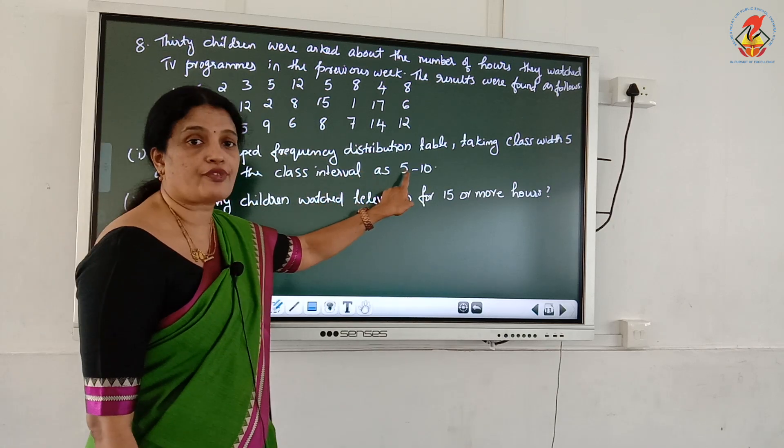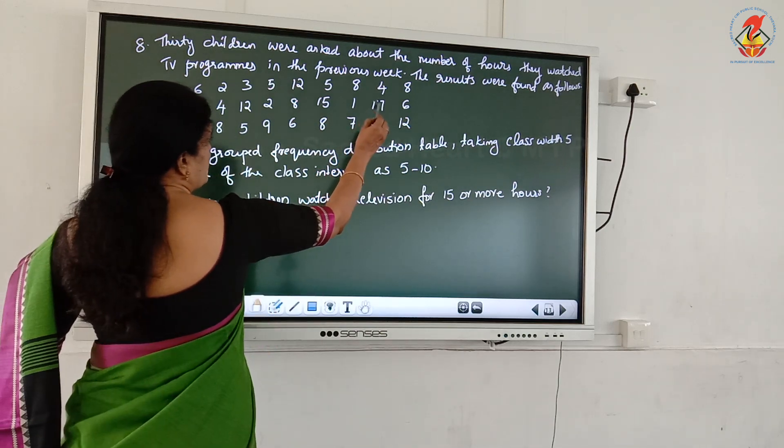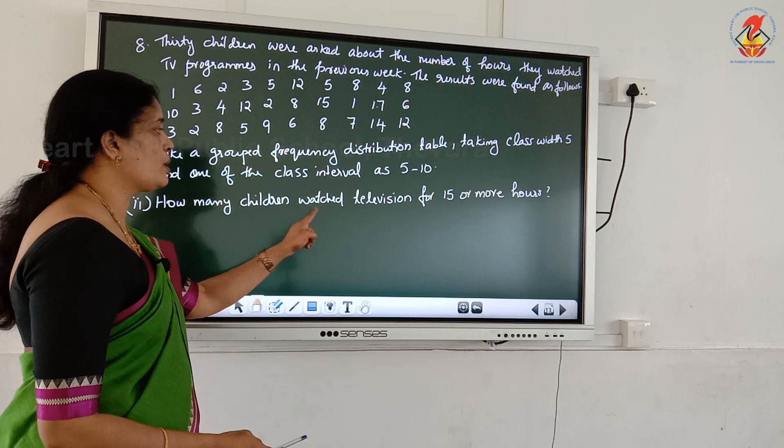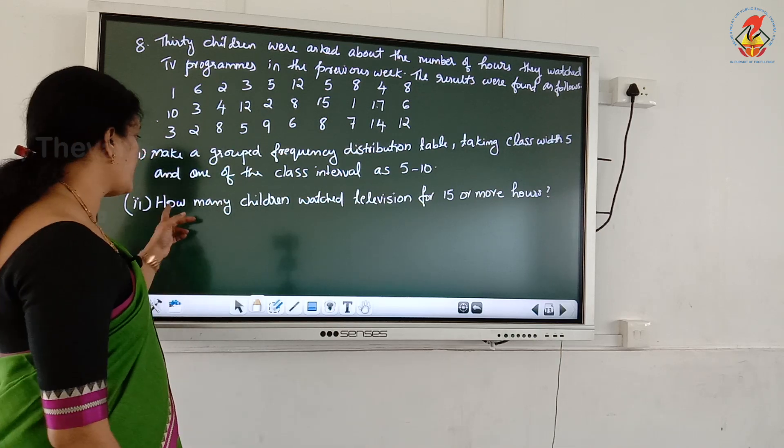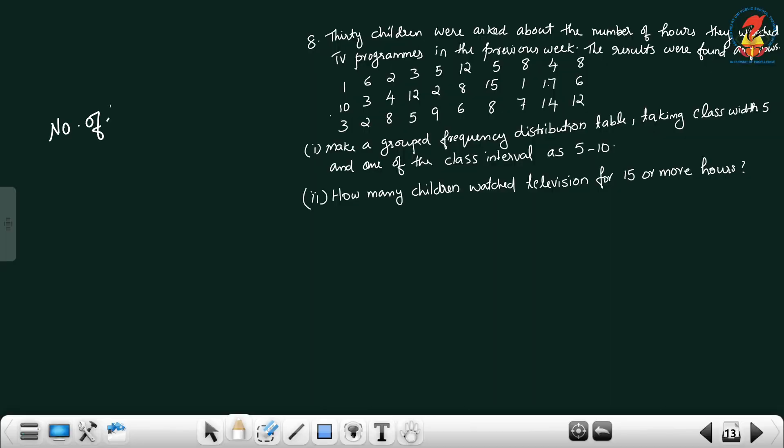Then we have to start from 0 to 5, 5 to 10. Then what is the greatest number? 17 is the greatest number. Definitely till 20 you should write the class interval. Second question: how many children watched television for 15 or more hours? First you make a grouped frequency distribution table and write the answer. Number of hours, tally marks, frequency. In class interval, so write it number of hours in class interval.